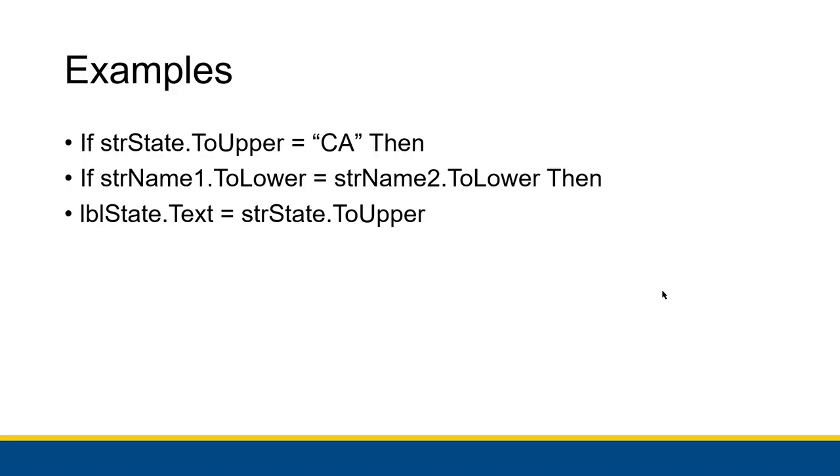We have another example where we're actually setting a label text property to strState.ToUpper. No matter if the user put in whatever, we can convert that to all uppercase to do the proper state abbreviation and then stick that in the text form. Again, strState.ToUpper, it doesn't modify strState. It's as if it replaces this whole thing with whatever strState's string actually was, but all uppercase, and then sticks that in lblState.Text.